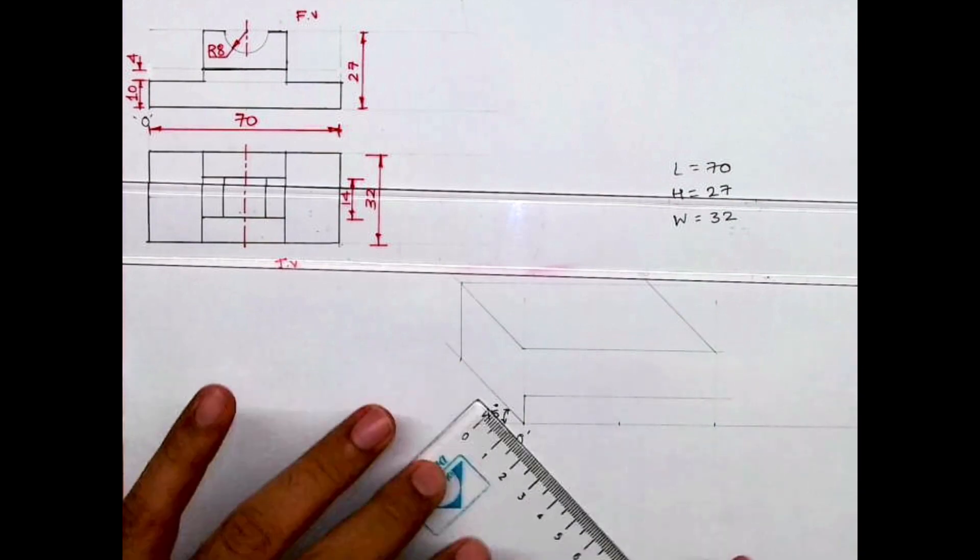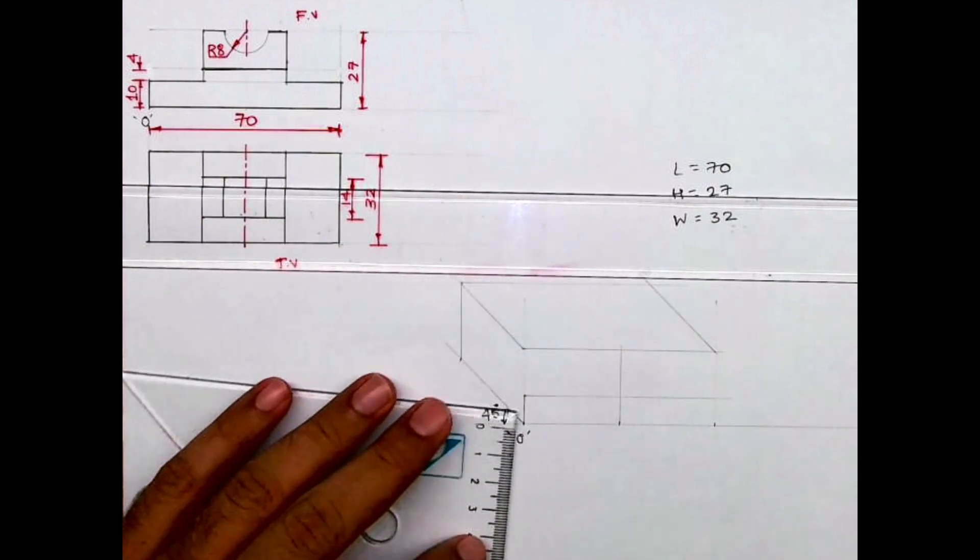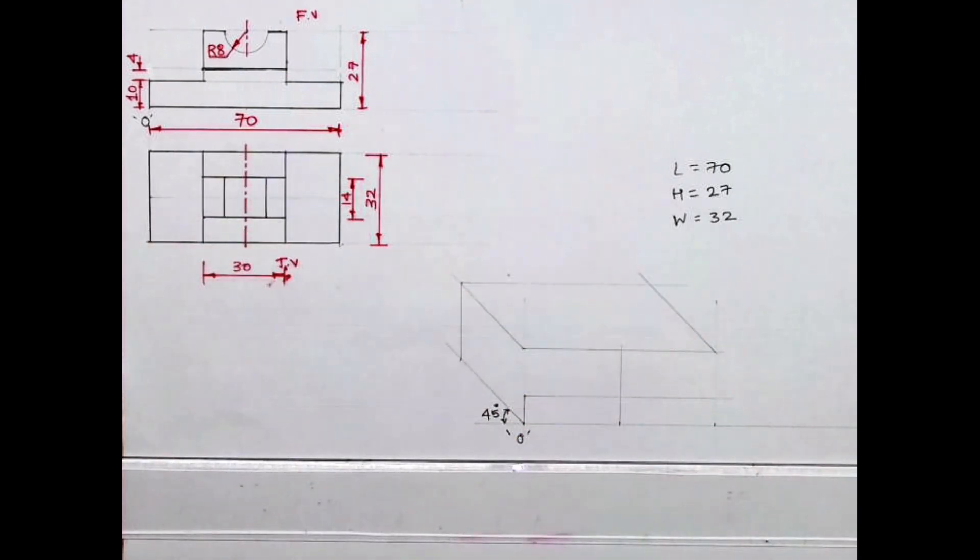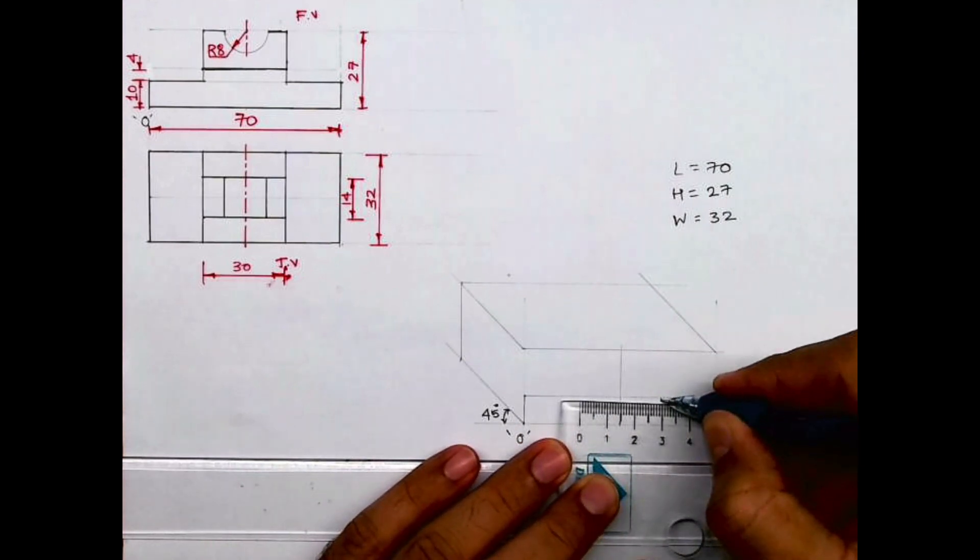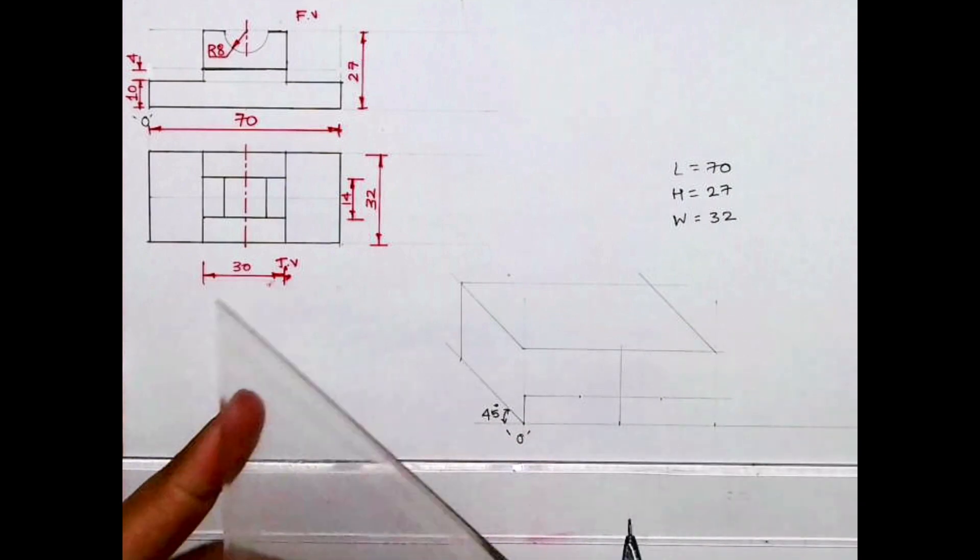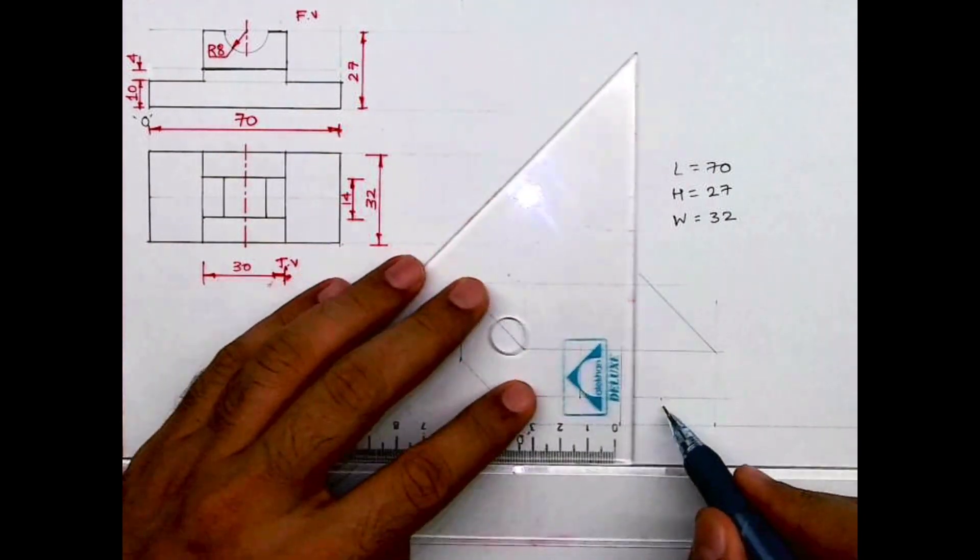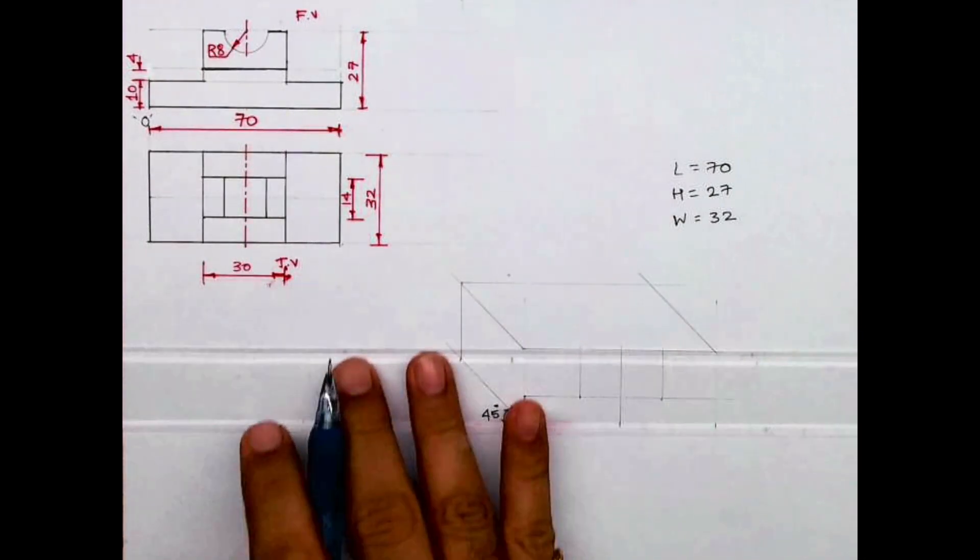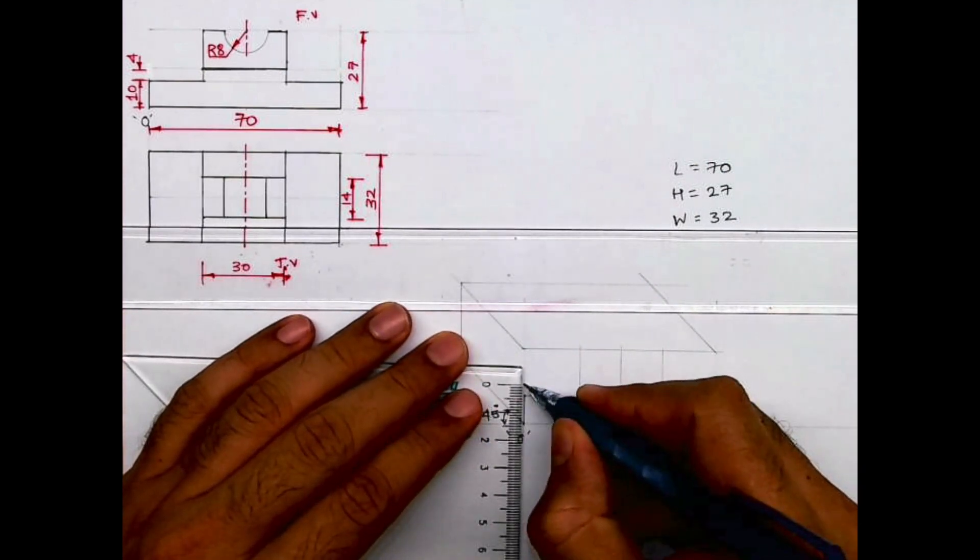We'll take midpoint. So this length is 30, so we'll take from center point, we'll take 15-15 and we'll draw vertical line. Then you take height 4.